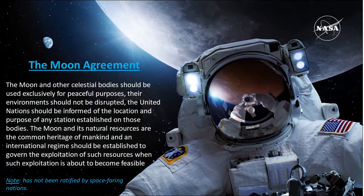One of the other treaties we mentioned is the Moon Agreement. One important thing to note is that this has not been ratified by any spacefaring nations. Key tenets include that the moon and other celestial bodies should be used exclusively for peaceful purposes, their environment should not be disrupted, the UN should be informed of the location and purpose of any station established on those bodies, the moon and its natural resources are the common heritage of mankind, and an international regime should be established to govern the exploration of such resources when exploitation becomes feasible. Again, noting that this has not been ratified by the United States or other spacefaring nations.